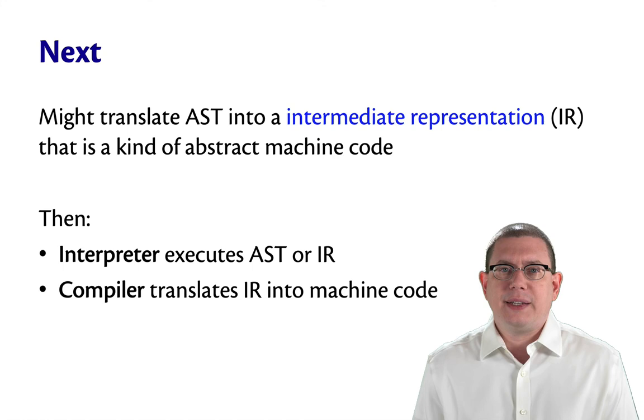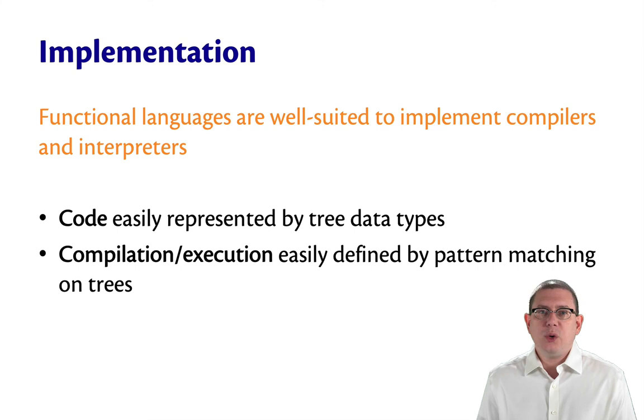Functional languages are really well suited to implementing compilers and interpreters. It's very easy to represent these tree data structures in a functional language using variant types. And the compilation and execution of those can be easily defined by pattern matching on trees.